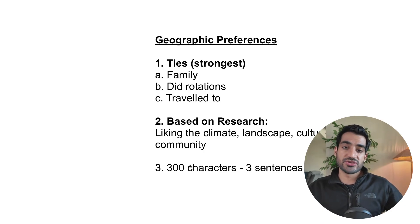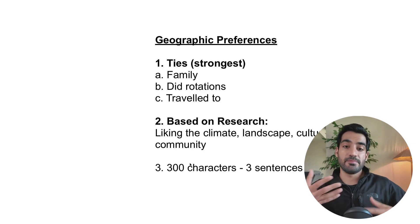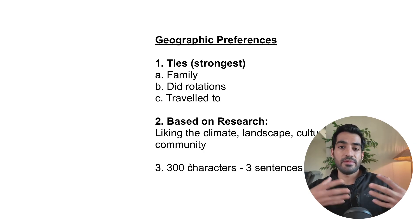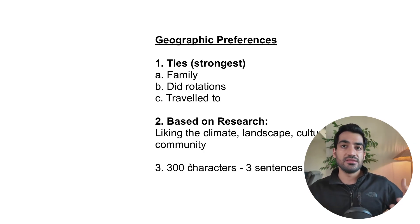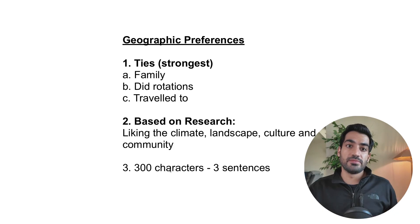If you've done research, it's okay to talk about how you've spoken to people, you have some mentors in the US, or maybe you've researched and you like the climate, landscape, culture, or community — and that's why you want to go there. These explanations should be about 300 characters or three sentences.